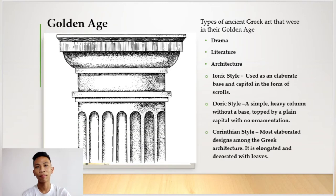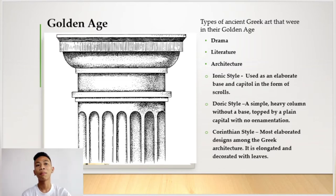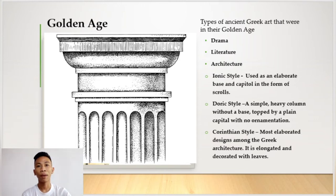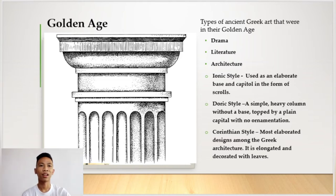Next is the Doric style. It is a simple, heavy column without a base, topped by a plain capital with no ornamentation. Unlike the Ionic style with its scrolled base, the Doric style is a heavy column without a base — very plain.